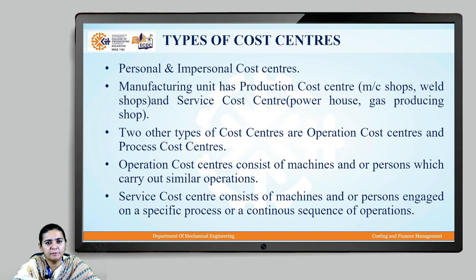Two other types of cost centers are operation cost centers and process cost centers. Operation cost centers consist of machines and/or persons carrying out similar operations. A process cost center consists of machines and/or persons engaged on a specific process or a continuous sequence of operations.